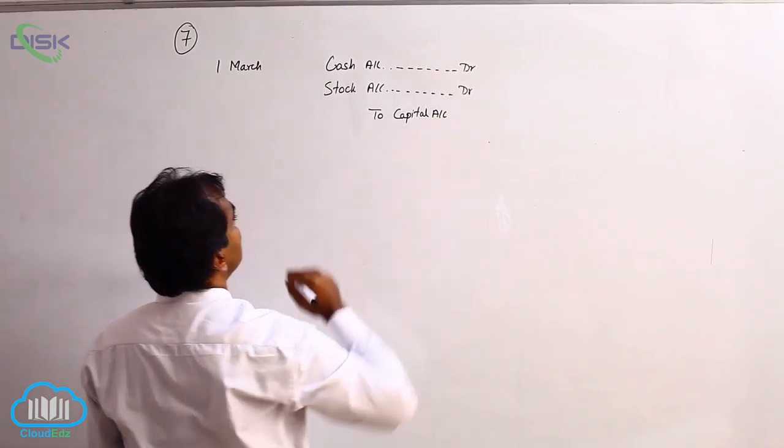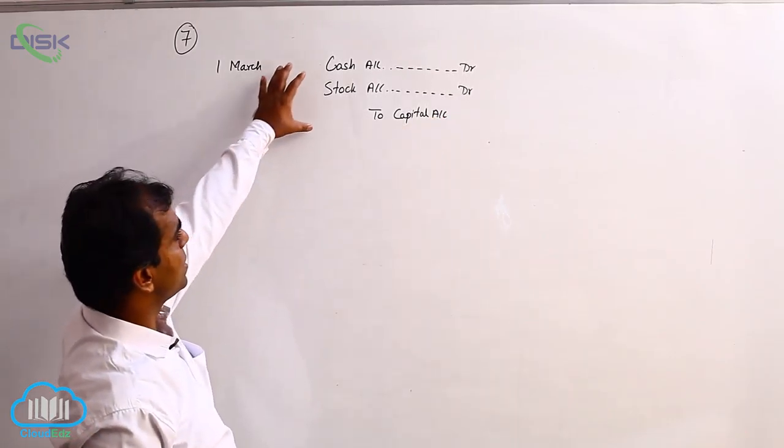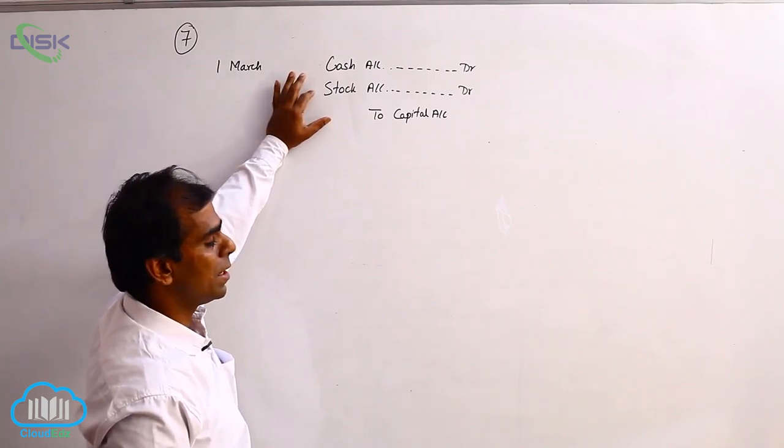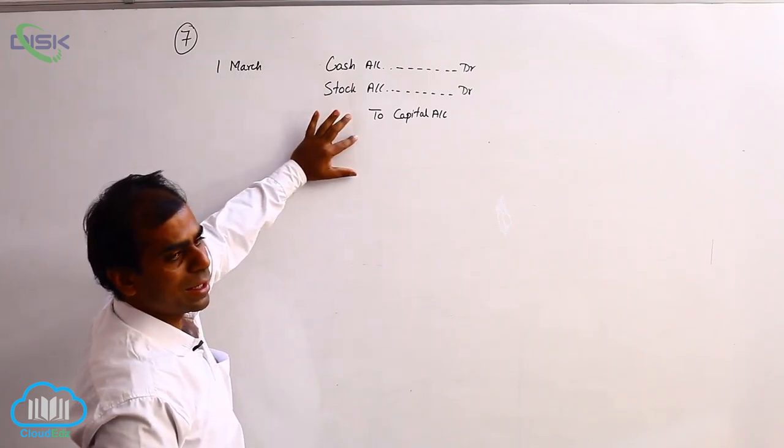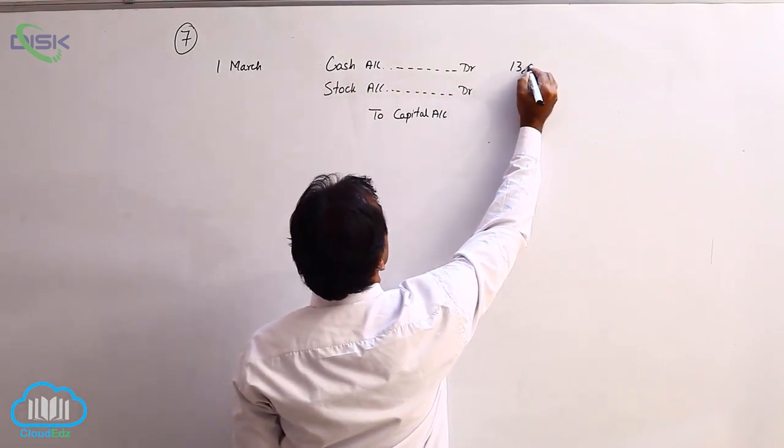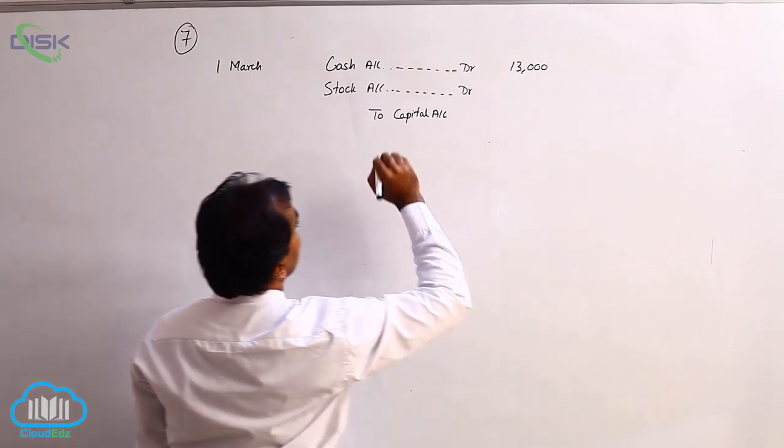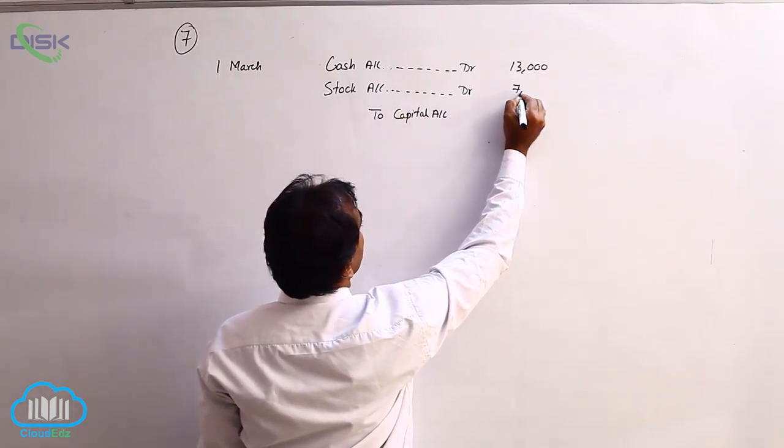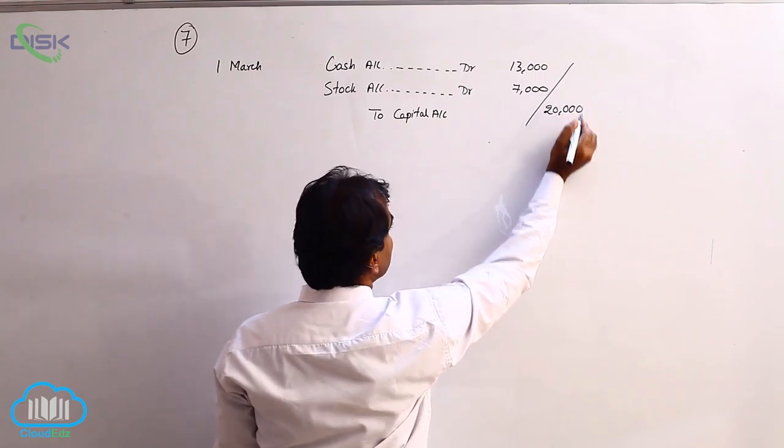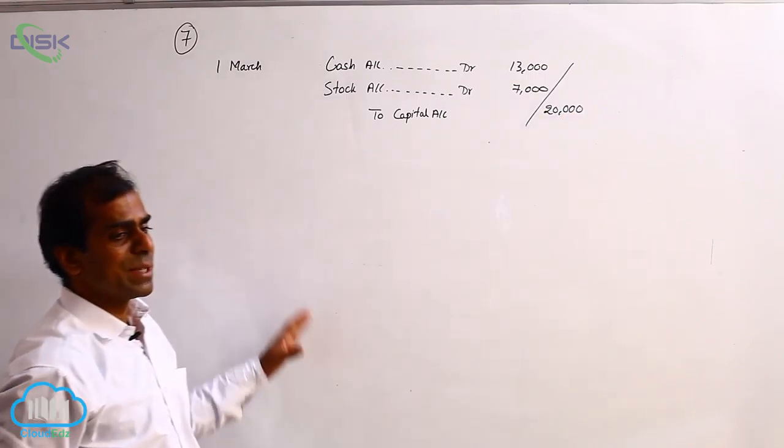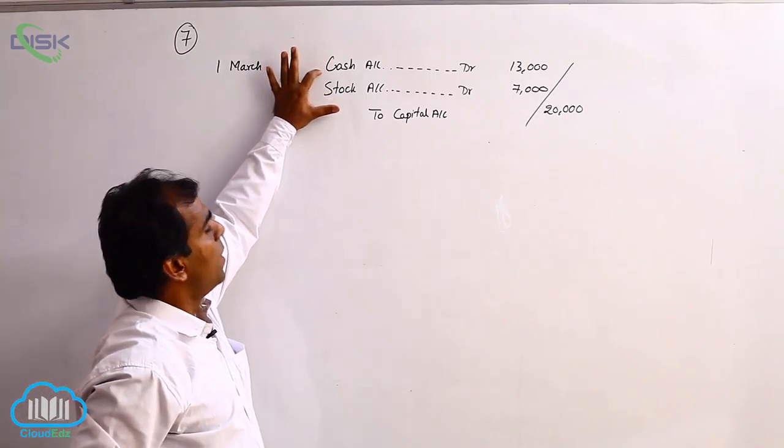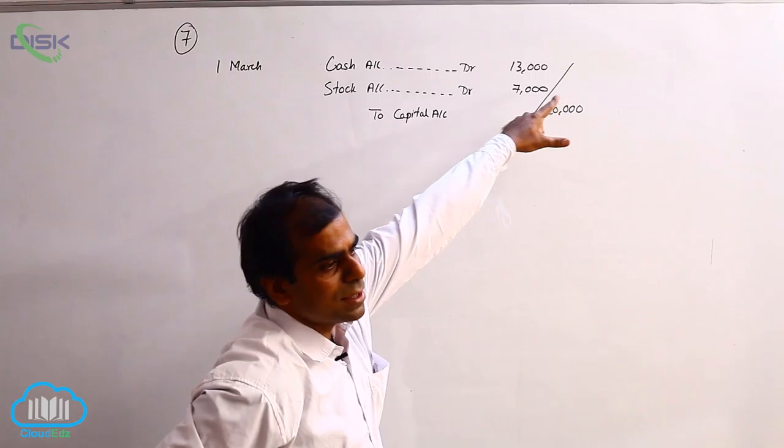So we write the journal entry as cash account debit, stock account debit, to capital account. Let us write the amounts. Cash 13,000, then we have stock 7,000, and together 20,000. This means on this date, this business is having with it assets in the form of cash 13,000 and stock 7,000.